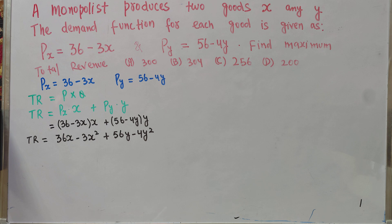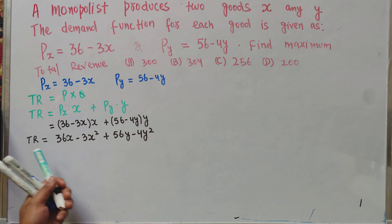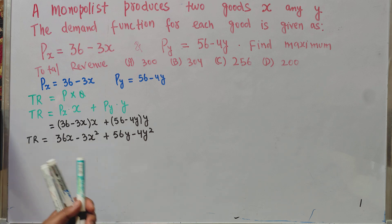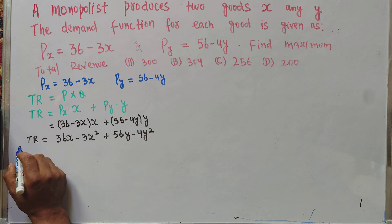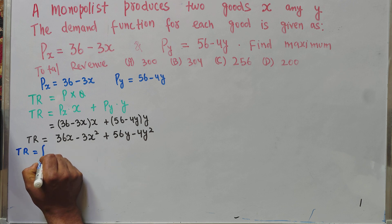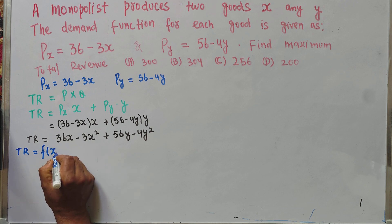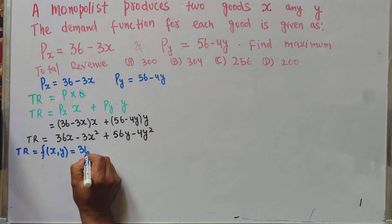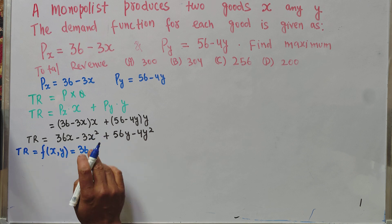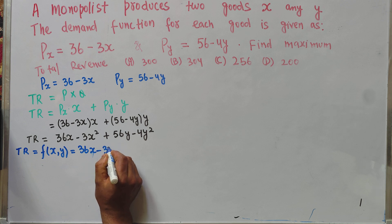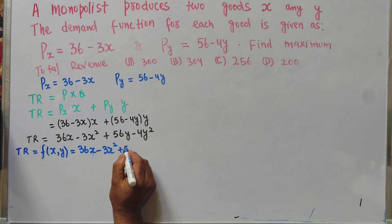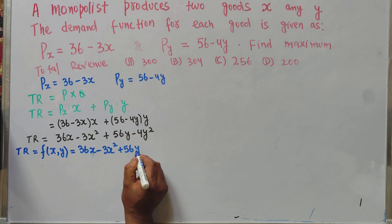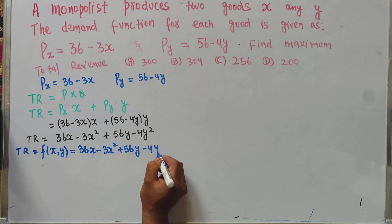Now we need to find the maximum total revenue given this total revenue function. We write TR as a function of two variables: TR(x, y) = 36x minus 3x² plus 56y minus 4y².